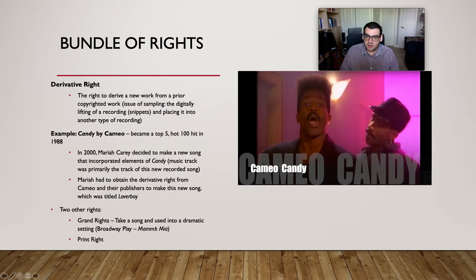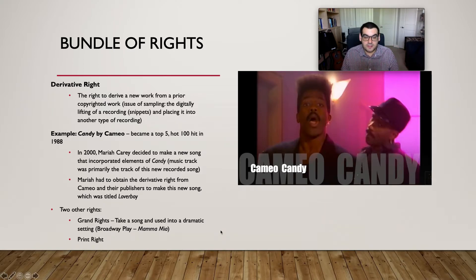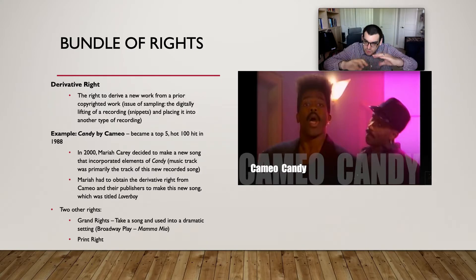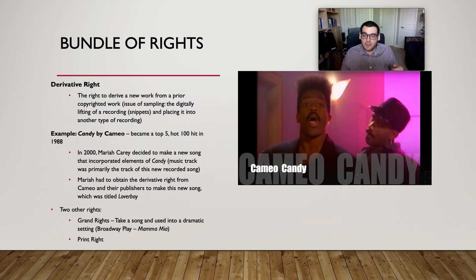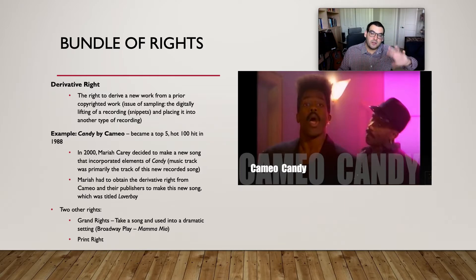There are two other rights we won't cover in depth: print rights and grand rights. Print rights are straightforward — if your music is published in a printed format, you have the right to earn income from that. Grand rights involve using a song in a dramatic setting, typically in Broadway plays. For example, the Broadway play 'Mamma Mia' uses songs from the band ABBA. They had to obtain grand rights to use those songs, and ABBA earns income from both the Broadway play and the movie 'Mamma Mia,' as does everyone involved in the production.